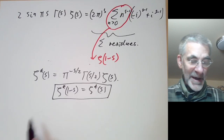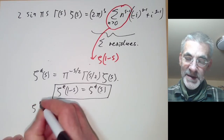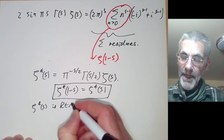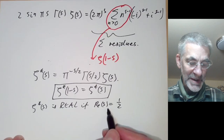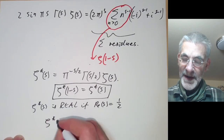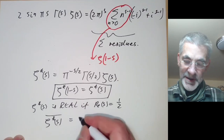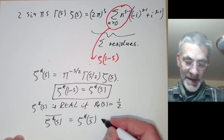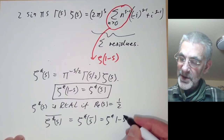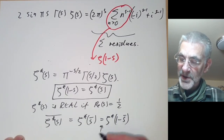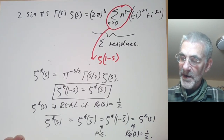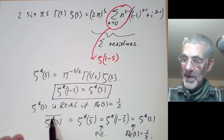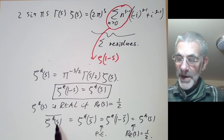One application: zeta star(s) is real when the real part of s equals one half — the critical line. This follows because the complex conjugate of zeta star(s) equals zeta star of the conjugate of s, which by the functional equation equals zeta star(1 minus the conjugate of s), which equals zeta star(s) when the real part of s is one half. So zeta star is actually real on this line.